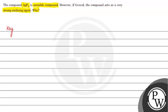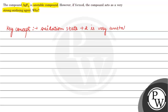The key concept used in this reaction is that we should know that the oxidation state +2 is a very unstable compound. This is for Ag (silver).